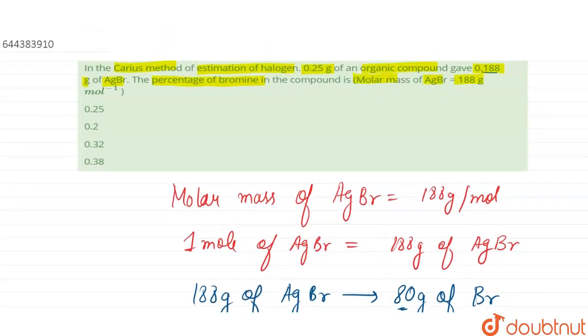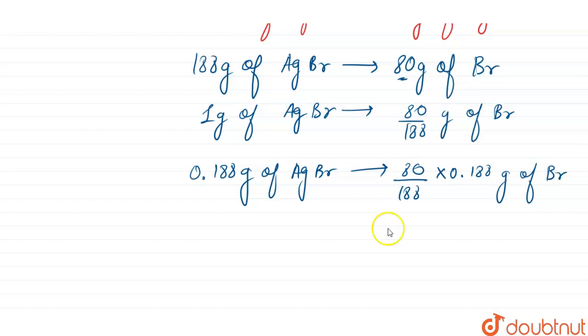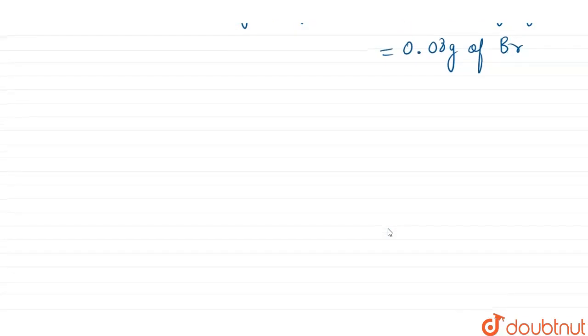So 0.188 gram of AgBr will have 80 by 188 into 0.188 gram of bromine that is present. So this comes out as 0.08 gram of bromine, right, that is there in 0.188 gram of AgBr.